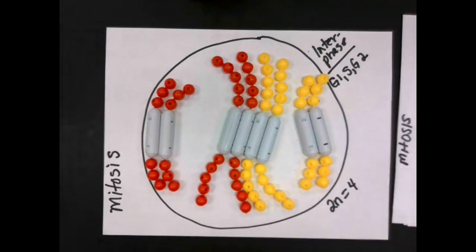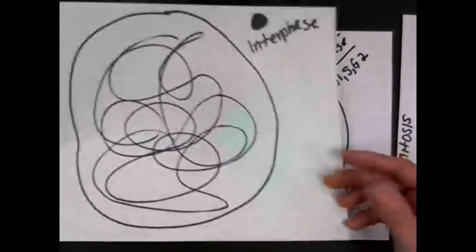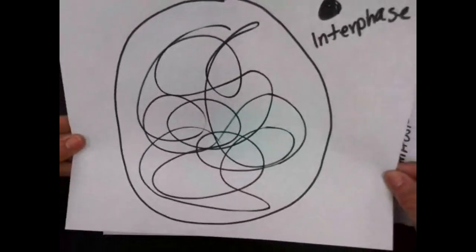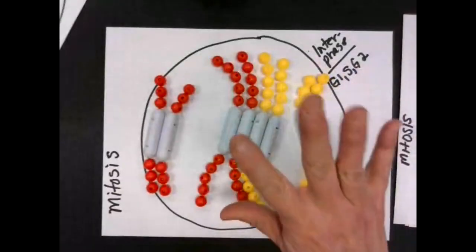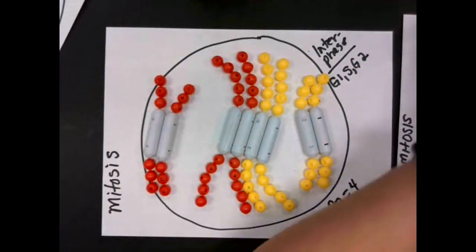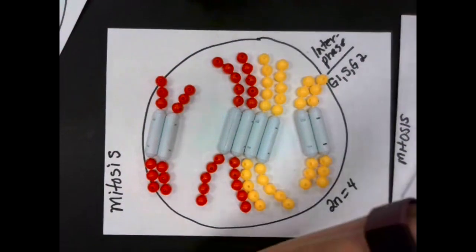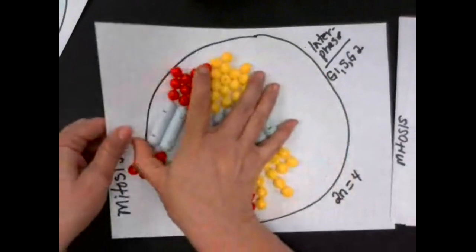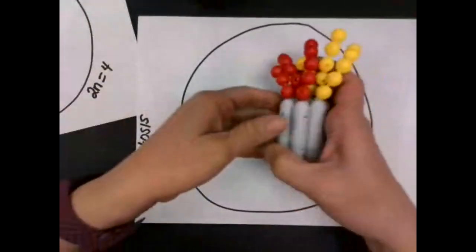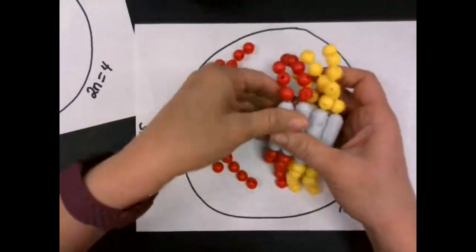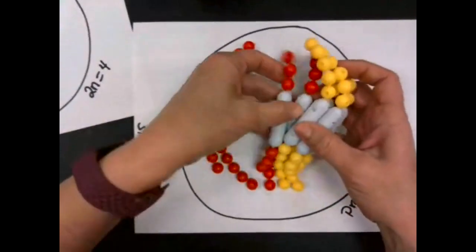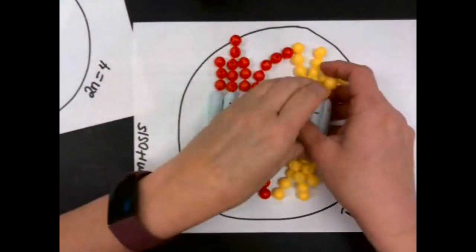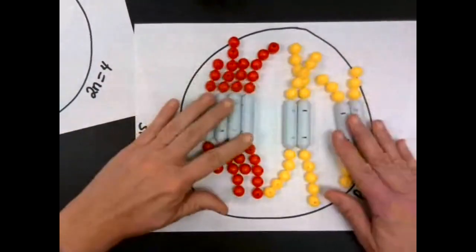Again, what you're going to see during interphase is the chromosomes look like loose spaghetti — they don't look like this until we get to prophase. So now I'm going to change out our paper here for prophase. We're going to move on into prophase. DNA is going to come together and now we can actually see it look like chromosomes.